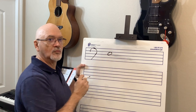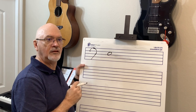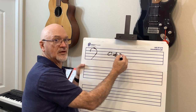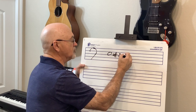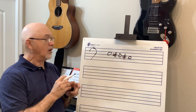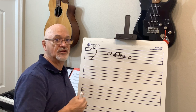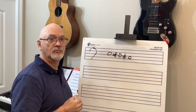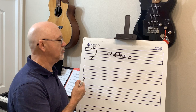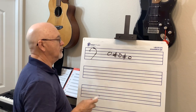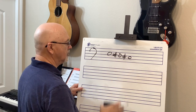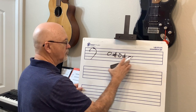Key of E: leading tone is D-sharp, so the submediant is C-sharp. The accidentals in E are F-sharp, C-sharp, G-sharp, D-sharp. The leading tone is D-sharp and the submediant is C-sharp.